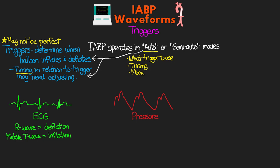The other trigger we have is the pressure trigger. In pressure mode, the balloon pump attempts to trigger inflation and deflation based on the pressures it reads. You'll actually see part of the arterial pressure waveform grayed out, showing that the balloon pump is recognizing parts of the waveform. You'll also see the heart rate indicator in the top right turn red. The trigger for inflation is the dicrotic notch on the arterial pressure, and the trigger for deflation is the start of the systolic upstroke.